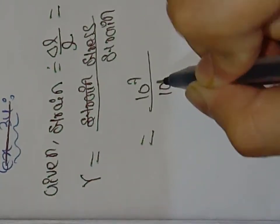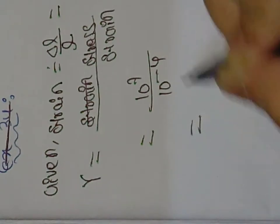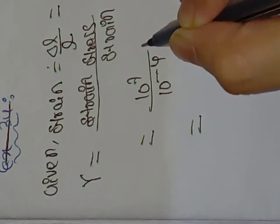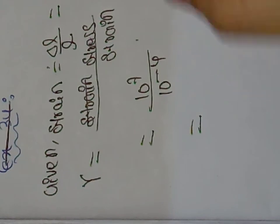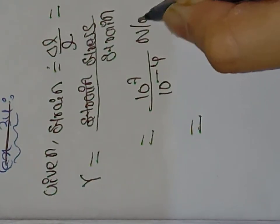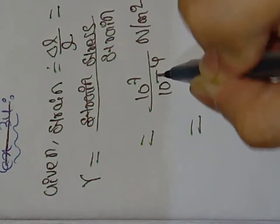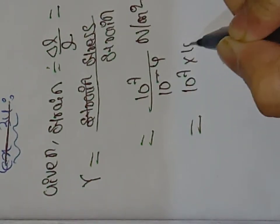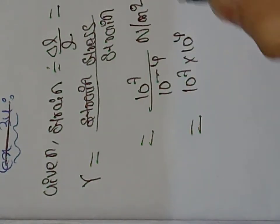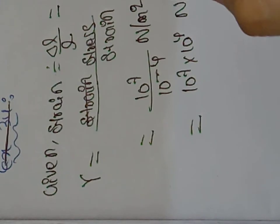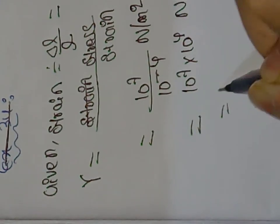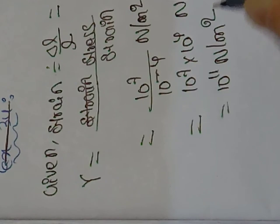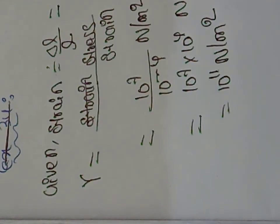So Young's modulus equals stress over strain — that is 10 to the power seven divided by 10 to the power minus 4. When minus 4 goes to the numerator, it becomes 10 to the power seven multiplied by 10 to the power 4, giving 10 to the power 11 Newton per meter square. This is the value of Young's modulus.